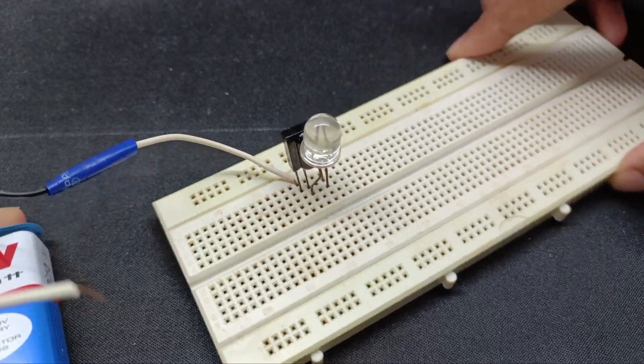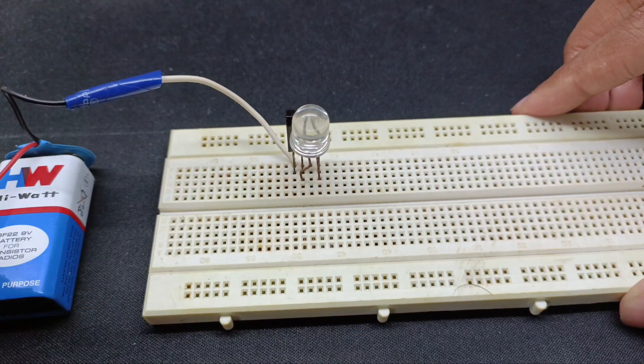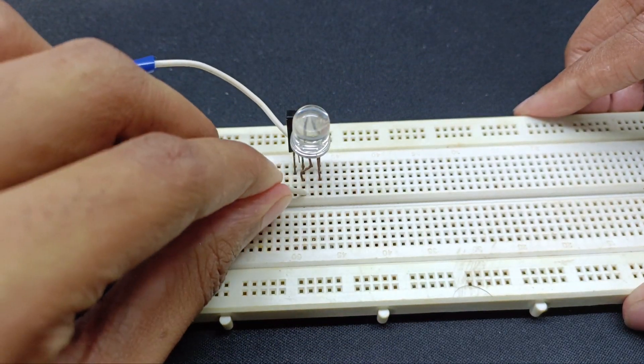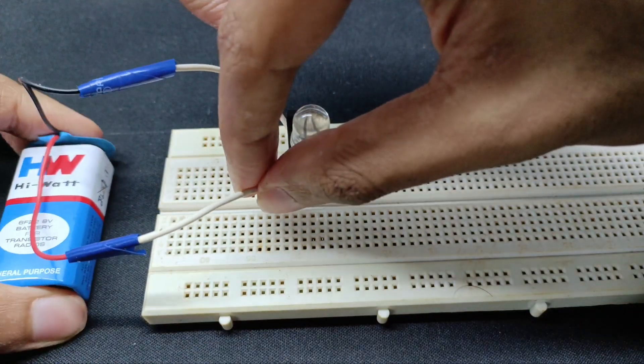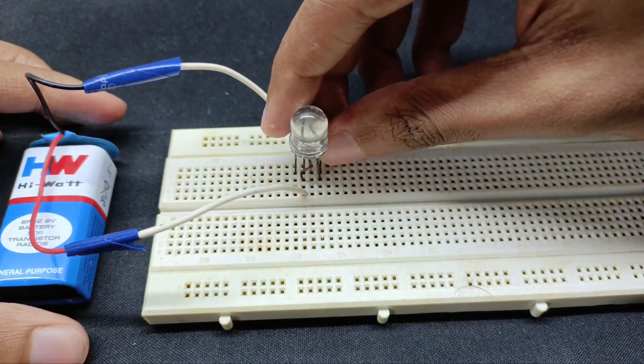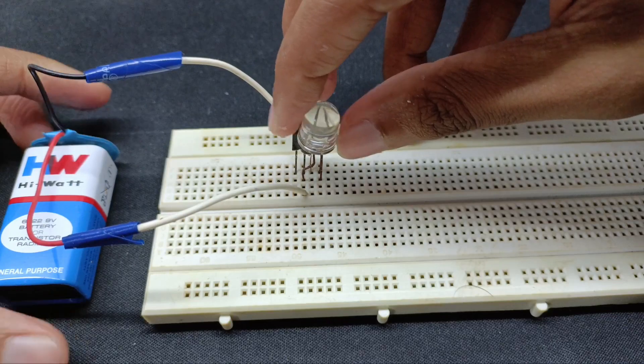So the anode of the LED should be connected to the center or the second pin of the TSOP1738. The cathode of the LED should be connected to the third pin of the TSOP1738.